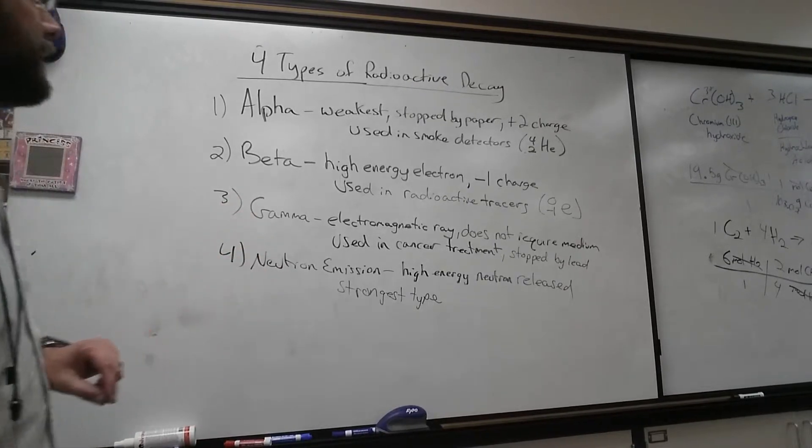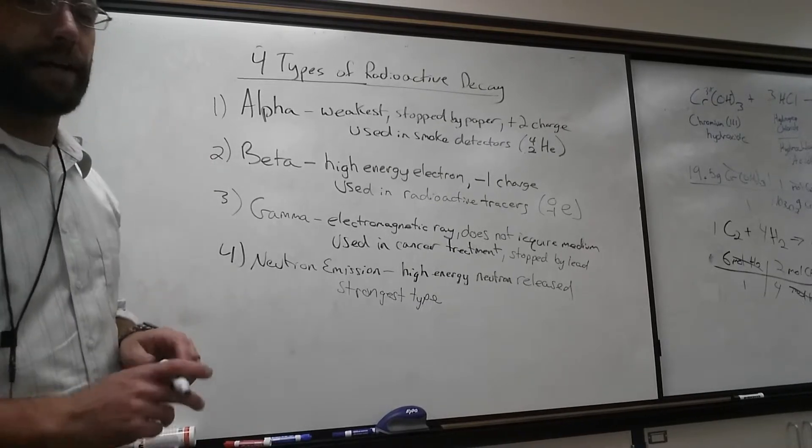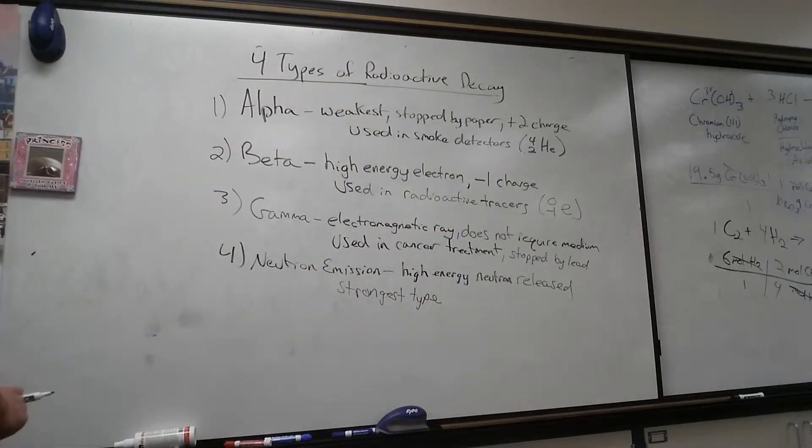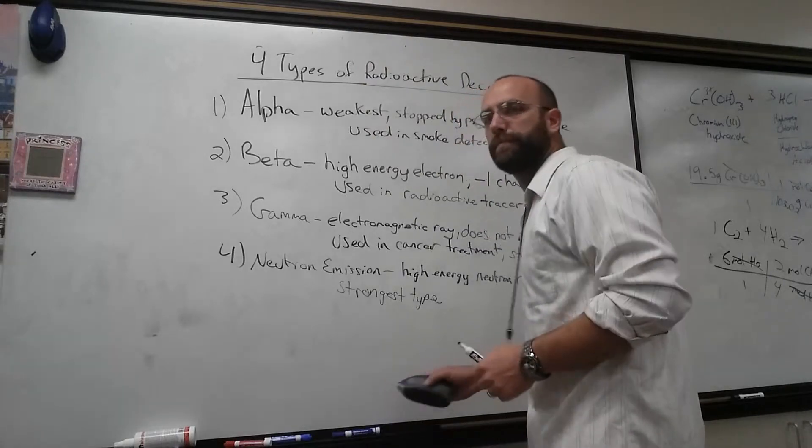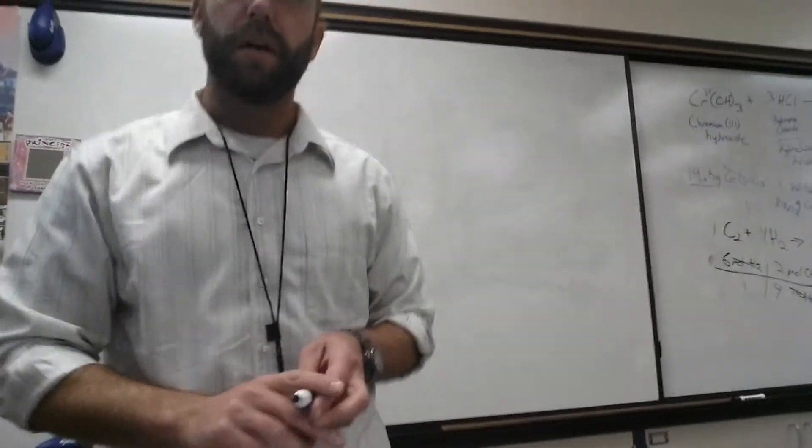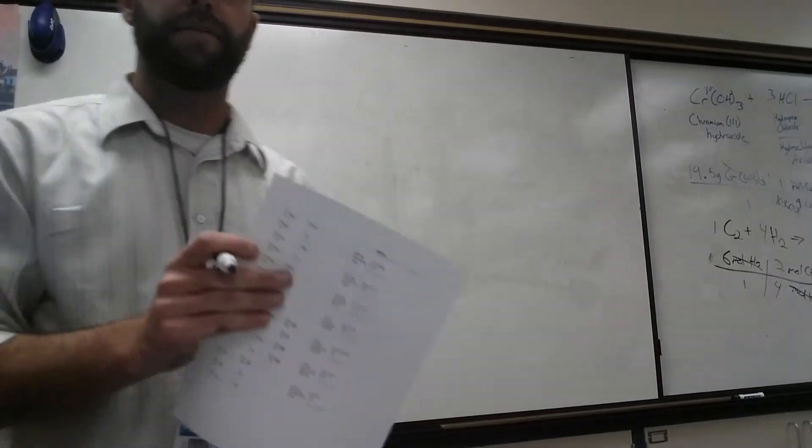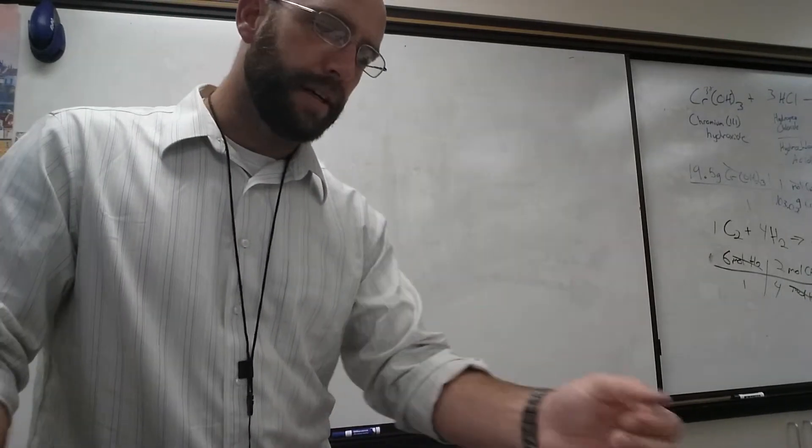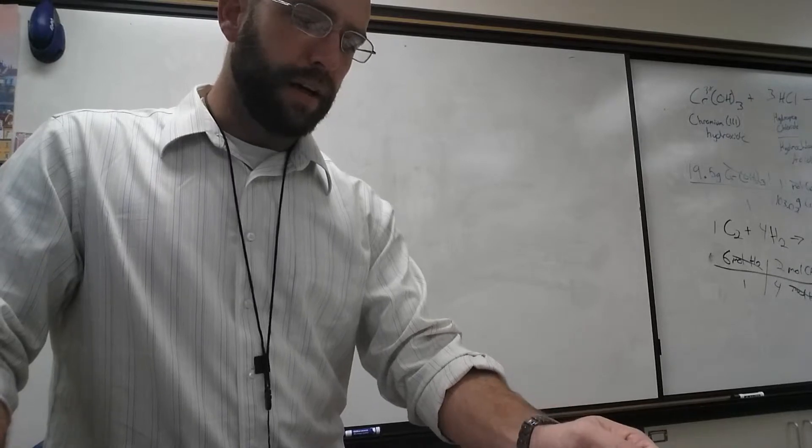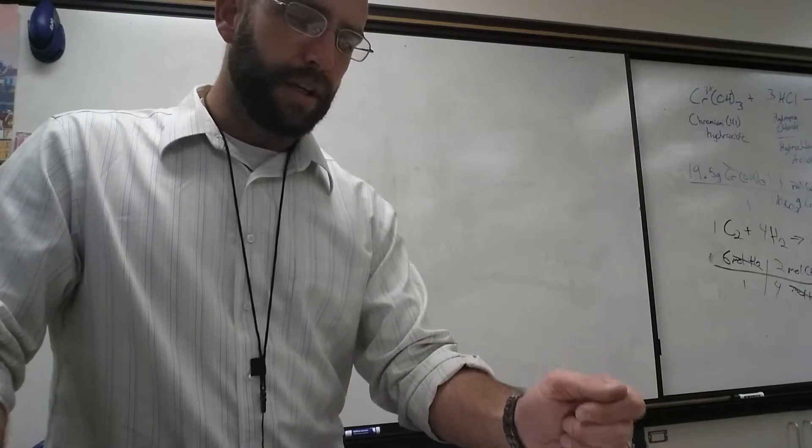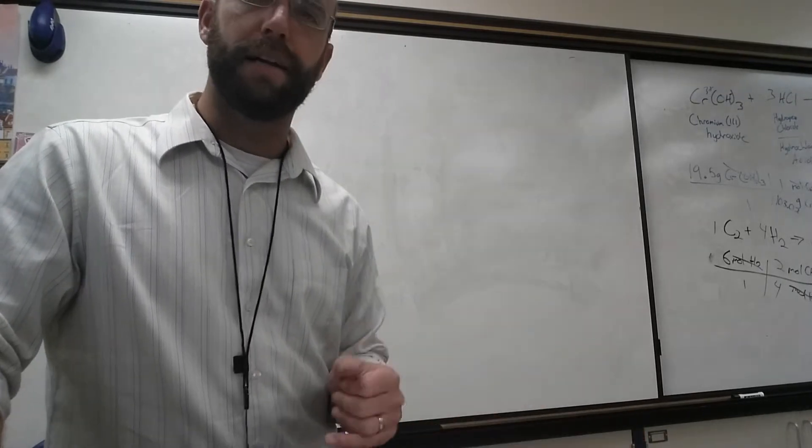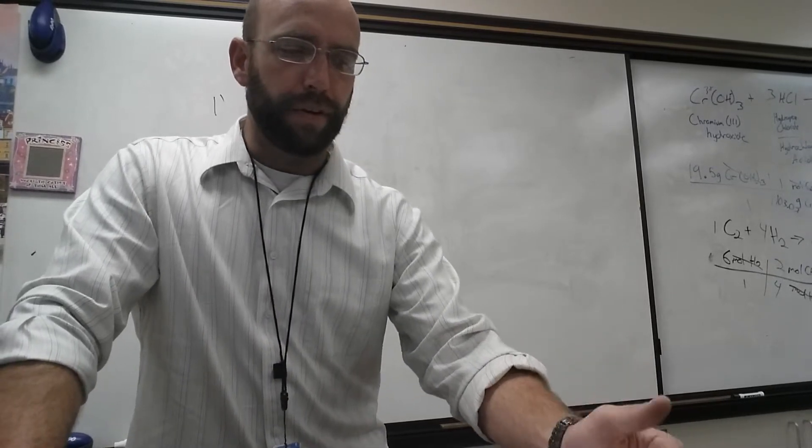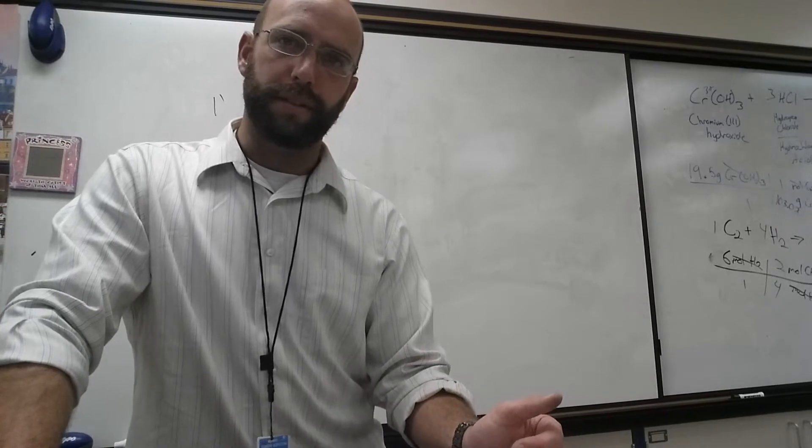Now we're going to need some basic calculations for alpha and beta. We're going to use these symbols: 4-2-He and 0, negative 1, E. I'm going to do a couple of sample problems pulled directly off your worksheet. I'm going to do the alpha example at the very top of the page, and then the beta example on the second line.